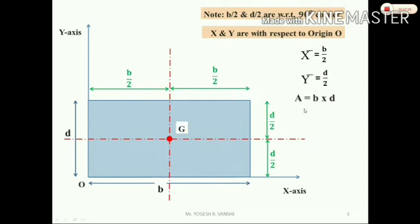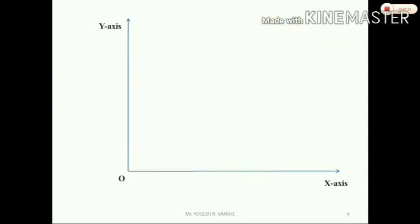This notation can be changed. In the book, you may have b given as small b or capital B, and small d may appear as h. So you need to change all the notation accordingly. You need to change the shape in the same way. You have x-axis, y-axis, and origin. Then you have to draw the triangle.